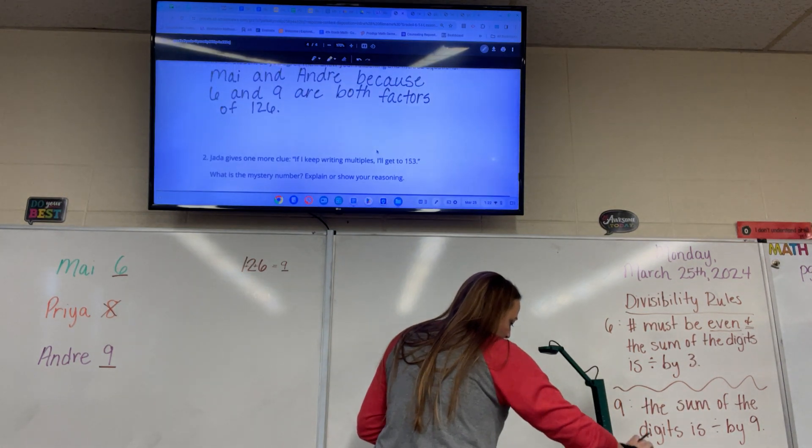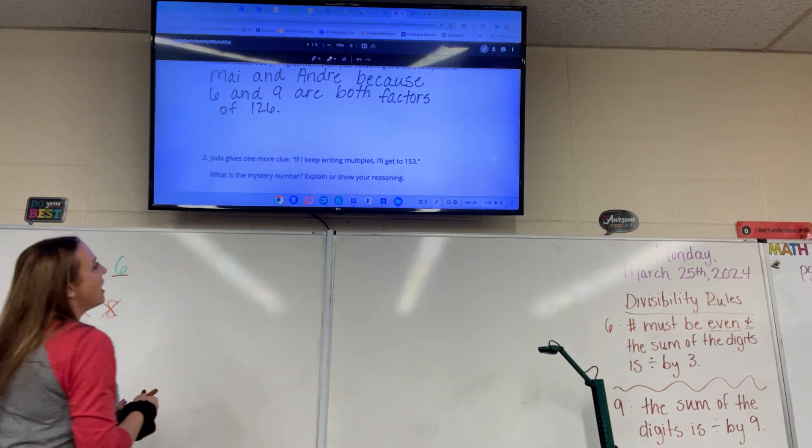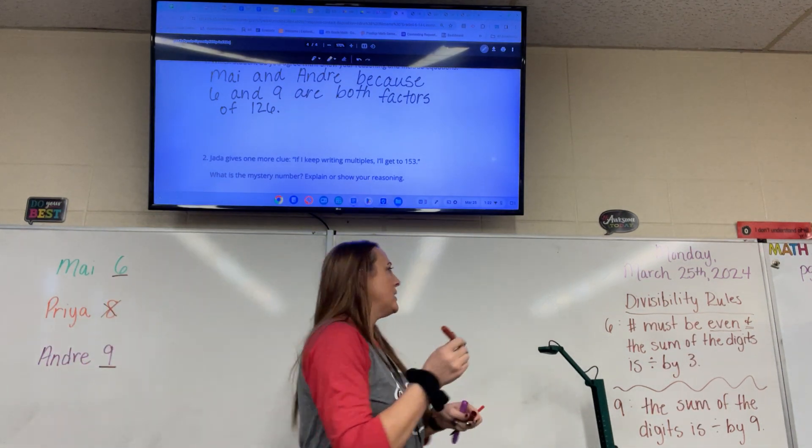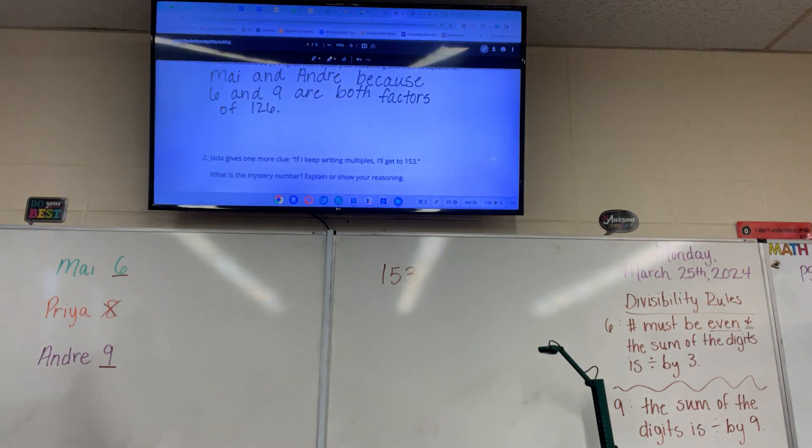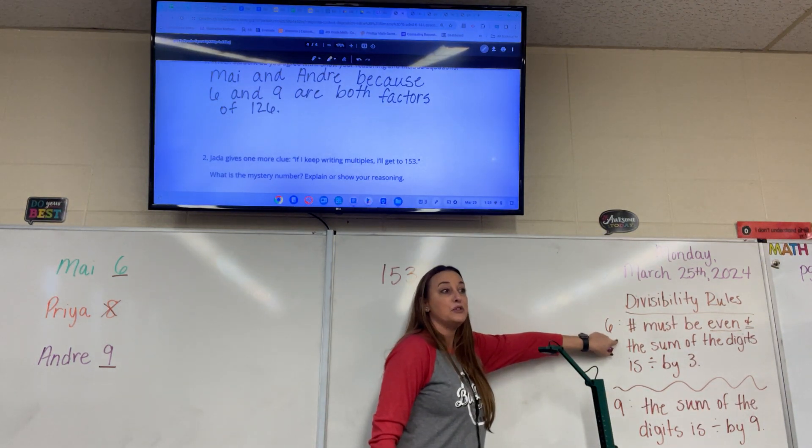Jada gives one more clue. She says if I keep going writing multiples I'll get to 153. So 153. What is that? Based on the divisibility rules, what number's out now? Whose guess is out? Priya is already out. Hers was out the first go around. Maya. Why is Maya out now? Olivia. Because six has all even. Because it's not even. Remember the rule for six. The first one says it has to be even. The multiples have to be even.